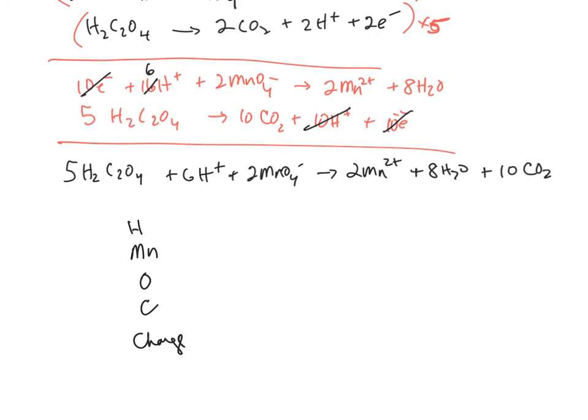So you have on the left-hand side, there's 16. On the right-hand side, there's going to be 16. And then there's two manganese on the left, two on the right. There are 28 oxygens on the left, and 28 oxygens on the right.